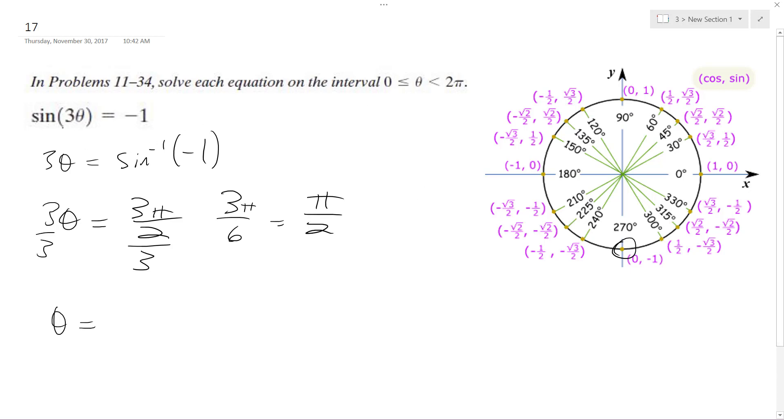So we've got two more solutions, and the reason why is because this cycle is 3 times compared to what a normal sine graph would cycle between 0 and 2 pi.